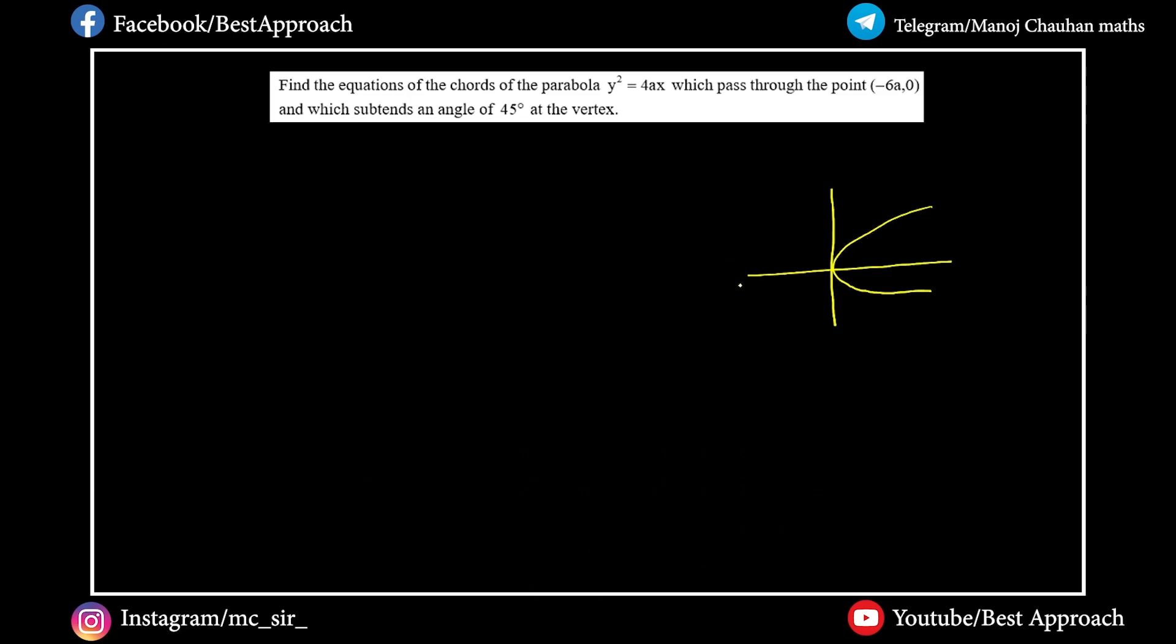What is the chord? It intersects the x-axis from (-6,0). This will become the chord. The chord extremities subtend 45 degrees at the vertex. This will be like this. Then the angle at the vertex is 45.